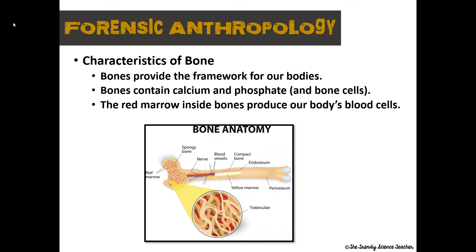What makes bones so remarkably durable? It's because bones contain calcium and phosphate, and they also contain bone cells. You can see in the picture the anatomy of the bone structure. Bones provide the framework for our body, so they have to be durable. There is red marrow inside the bones that produces the body's blood cells.